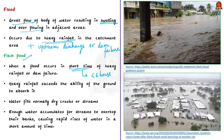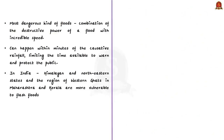Flash floods occur when heavy rainfall exceeds the ability of the ground to absorb it, when water fills normally dry creeks or streams, or when enough water accumulates for streams to overtop their banks, causing rapid rises of water in a short time. Flash floods are the most dangerous kind of floods because they combine the destructive power of a flood with incredible speed and can happen within minutes of the causative rainfall, limiting the time available to warn and protect people.